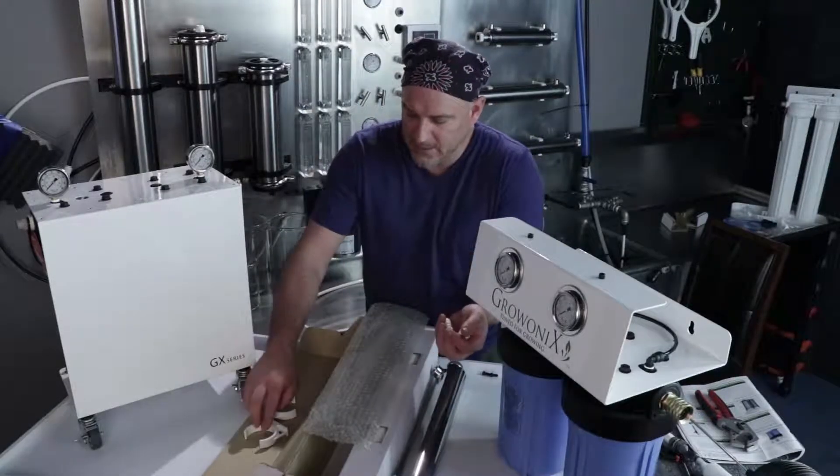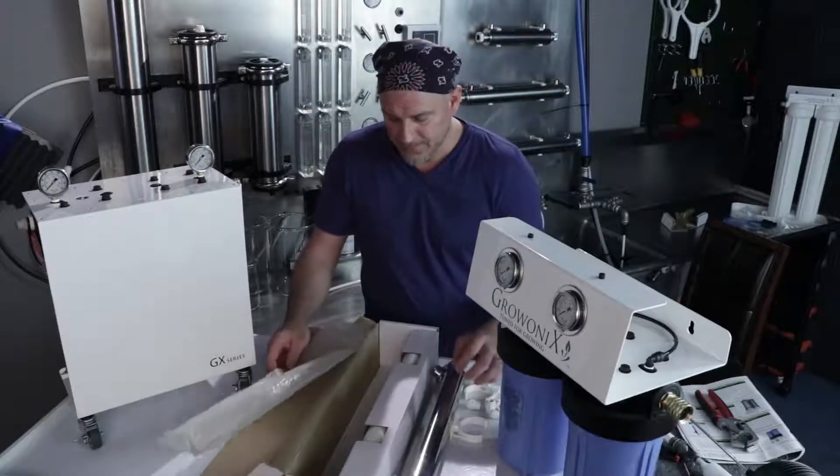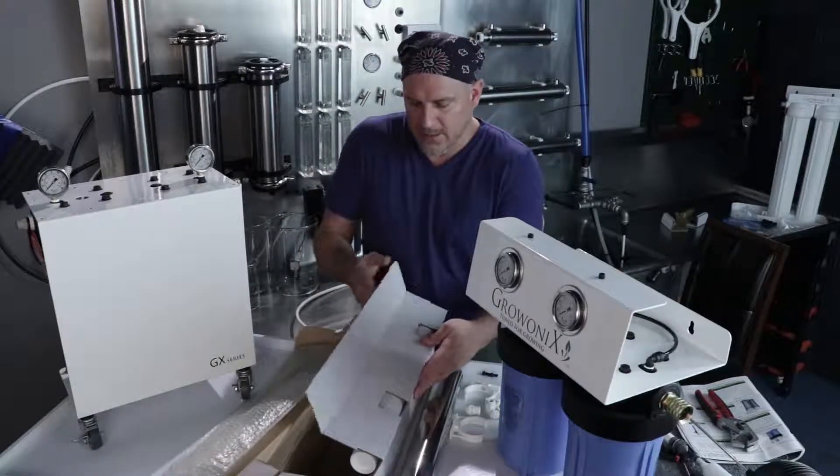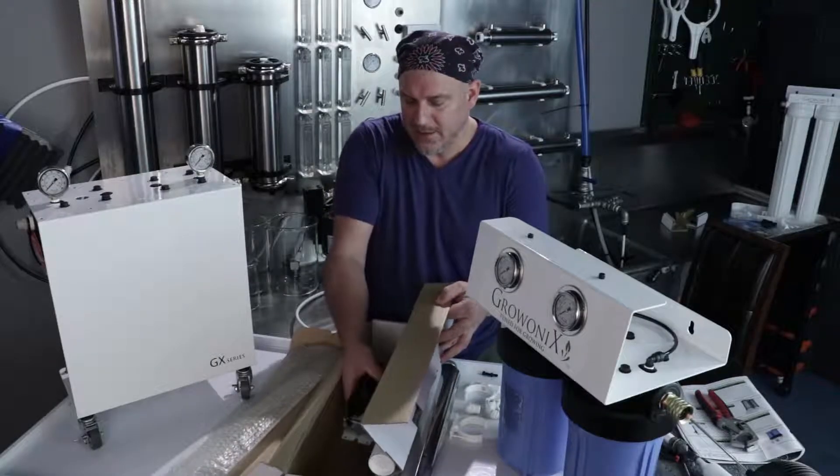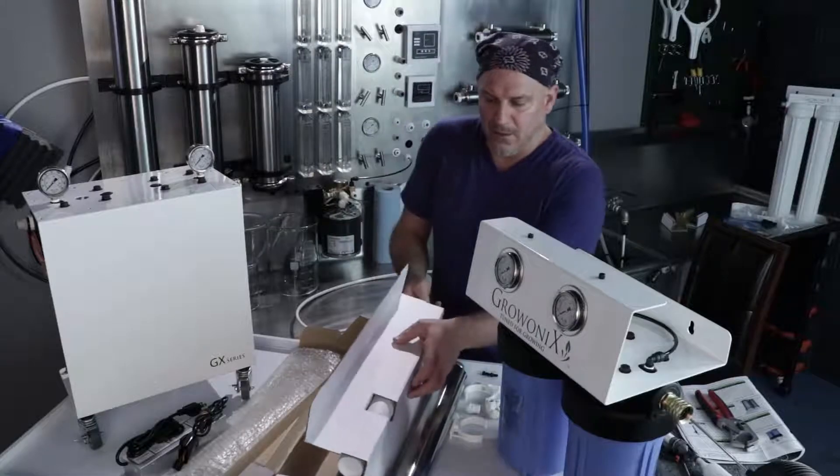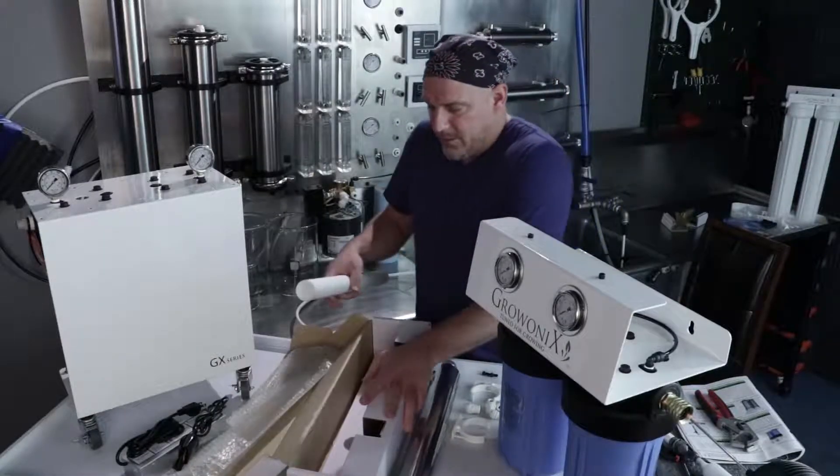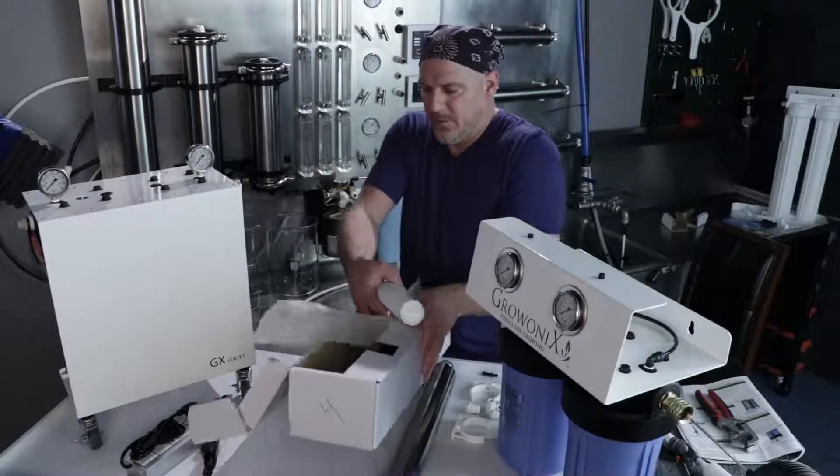It comes with fittings and a couple clips to attach the UV. Inside the box you're going to find the ballast for the UV and there's also a bulb tucked away in the corner of the box.